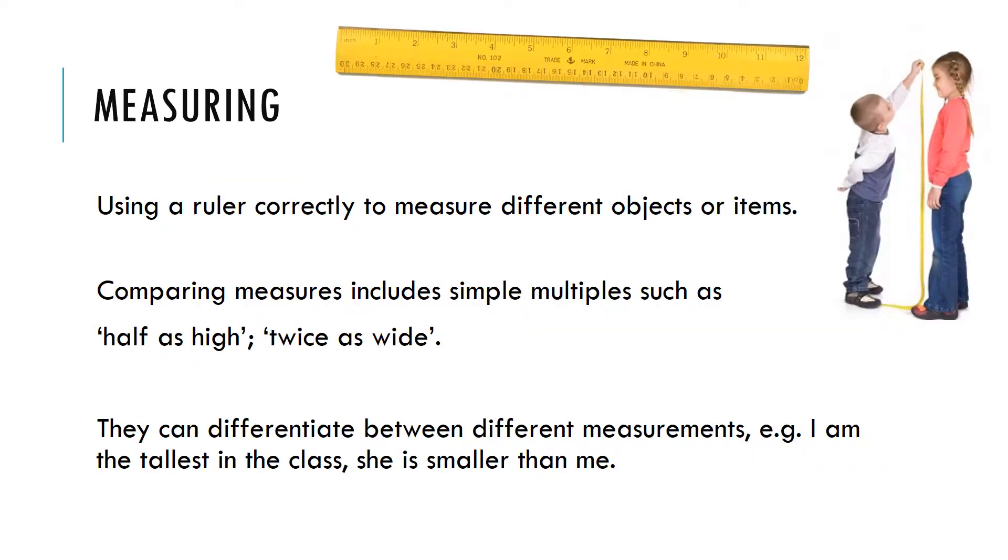Measuring. Using a ruler correctly to measure different objects or items. Comparing measures includes simple multiples such as half as high, twice as wide. They can differentiate between different measurements.